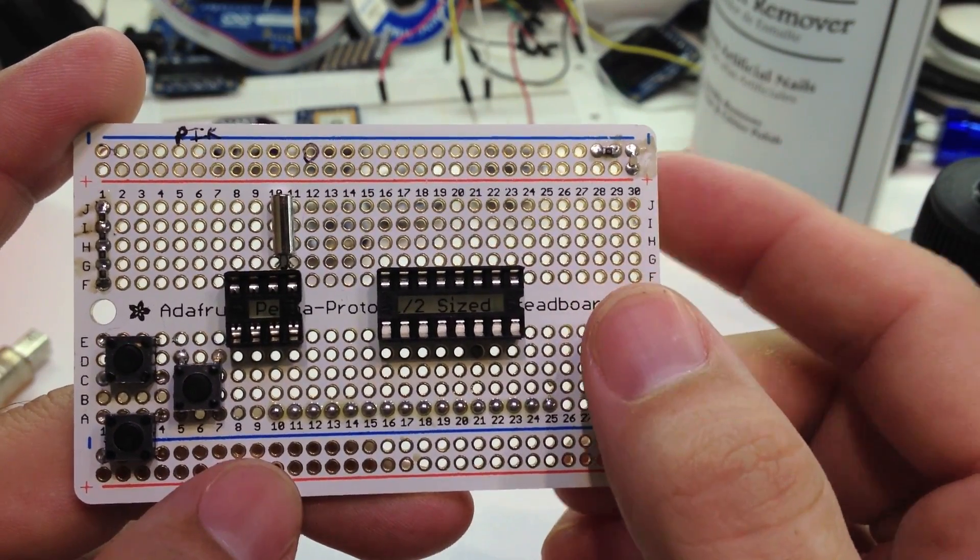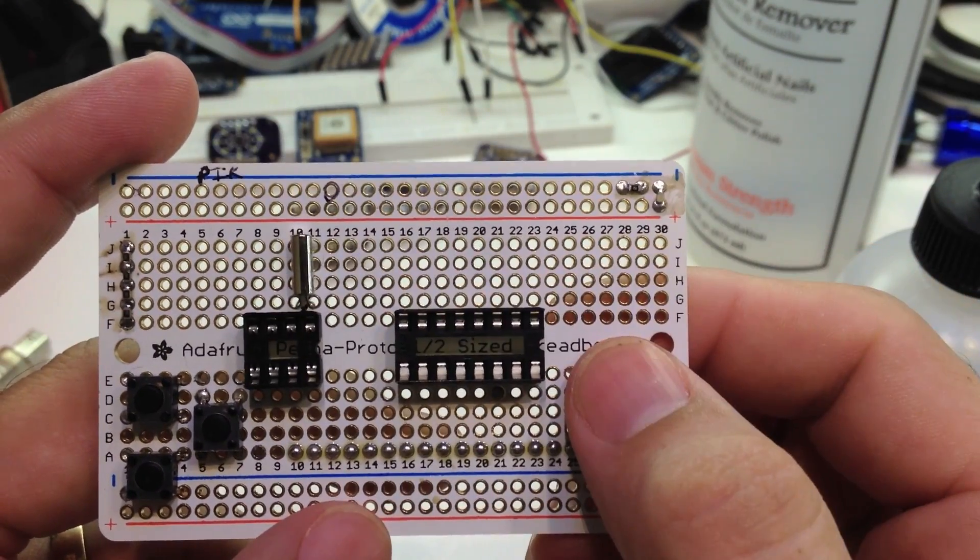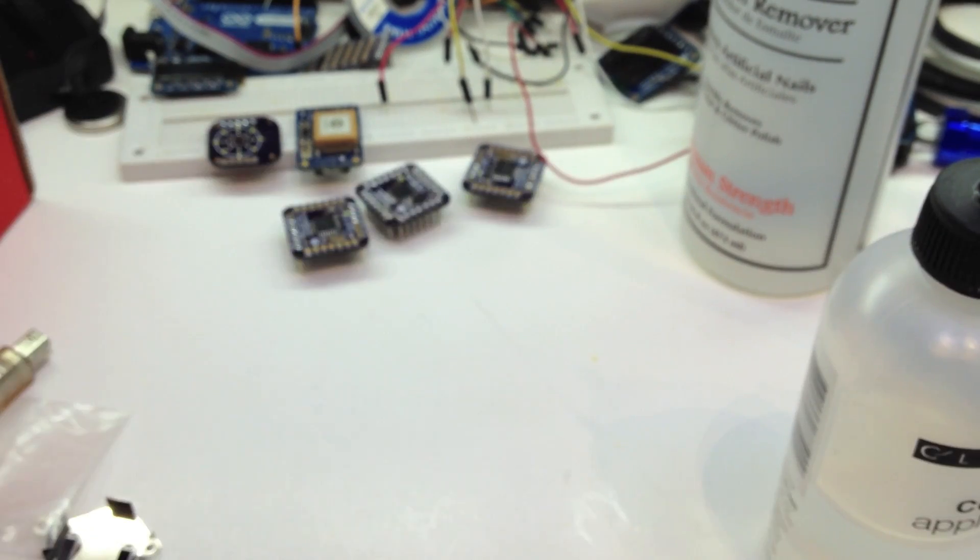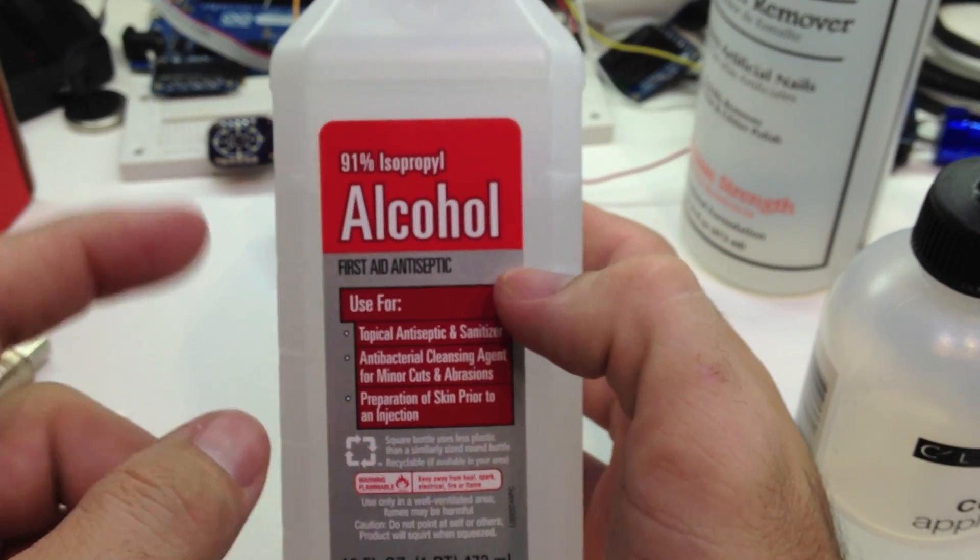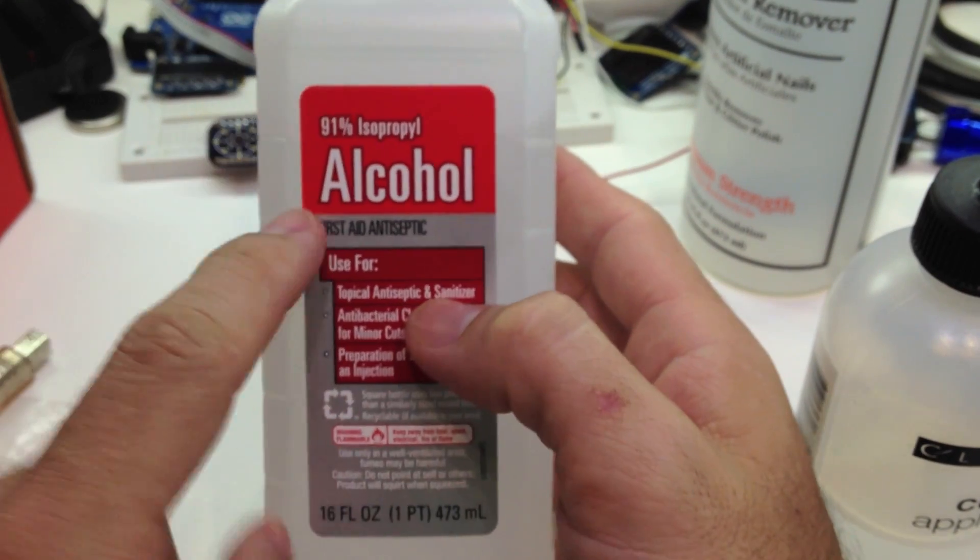So I just thought I'd share something that Jerry Ellsworth shared, and I tried, and it works amazing. Flux removal stuff is very expensive, but she pointed out that most of it is half alcohol. This cost me a dollar I think at Walmart, 16 ounces of 91% alcohol.